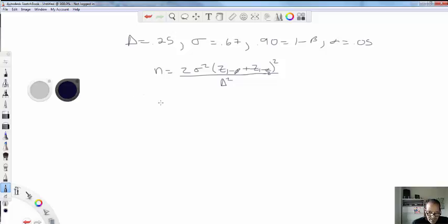Alright, so let's go ahead and fill in these numbers here. So we know that sigma is 0.67. So we have 2 times 0.67 squared times we need this z value associated with 1 minus beta. Beta is 0.10.